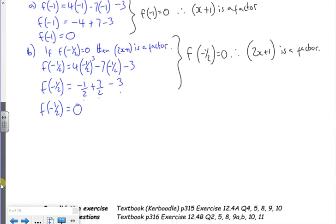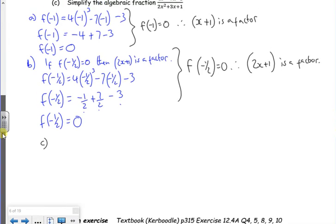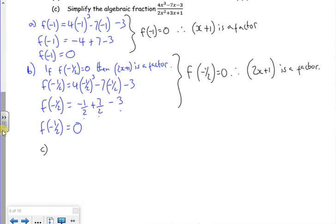Let's have a look at c now. I'm going to try and get the question on the board: 4x cubed minus 7x minus 3 over 2x squared plus 3x plus 1. So you've got to be careful. Did you notice that this top line I've used in parts a and b? If not, you end up trying to factorise it again from scratch. So we've done it. We've got two of the three factors.